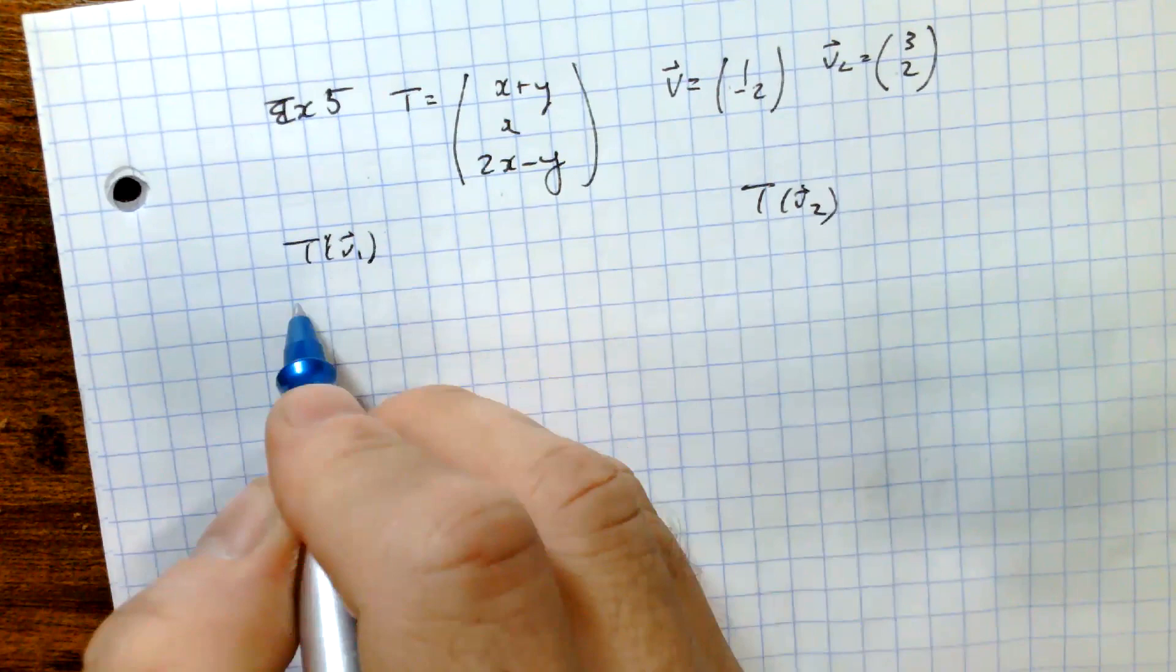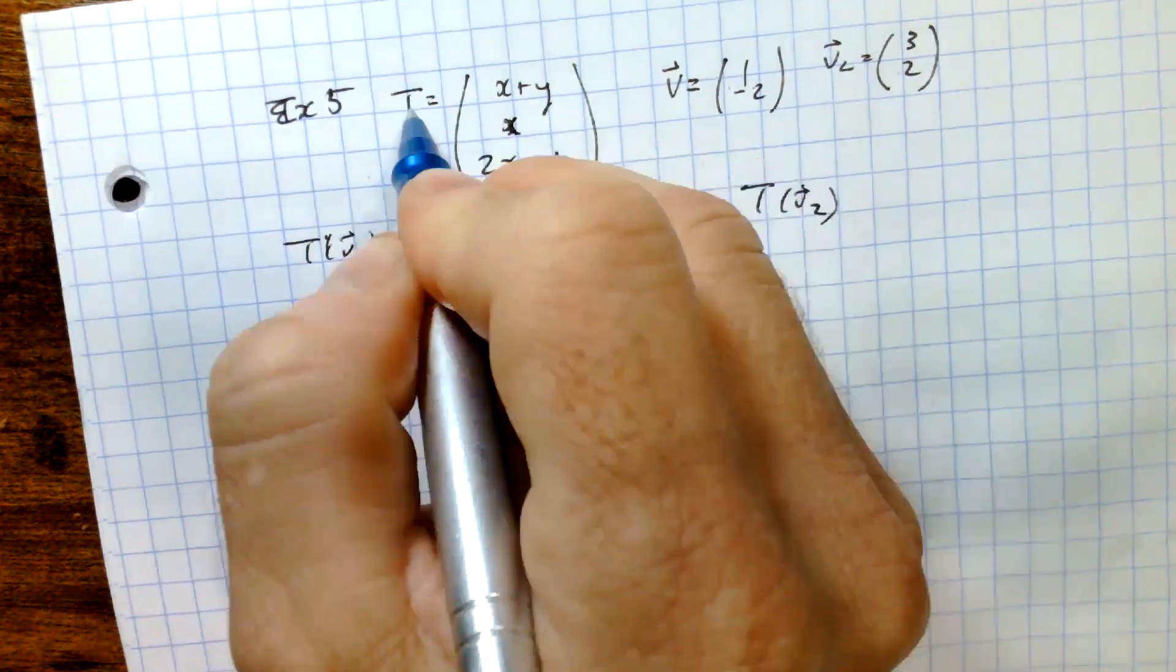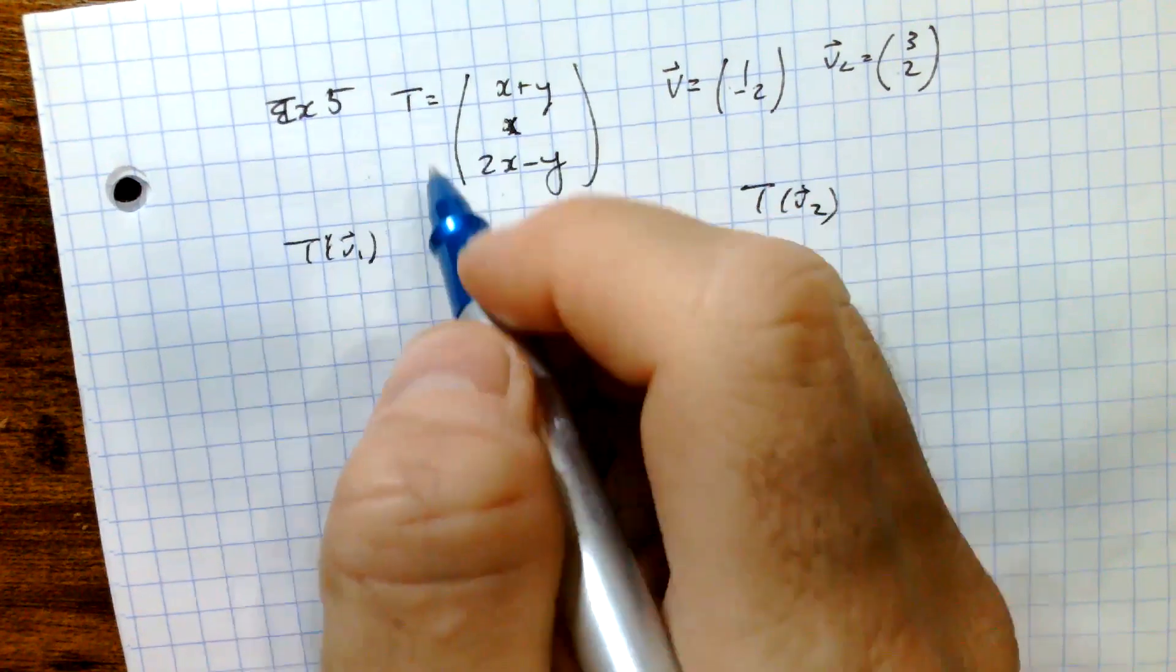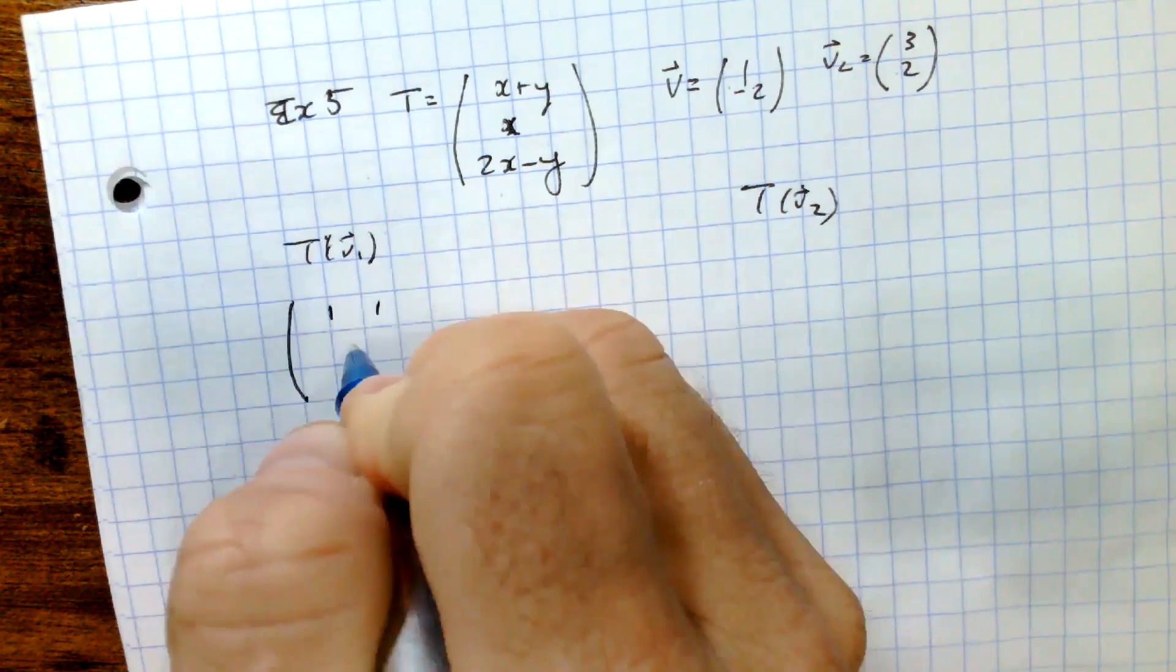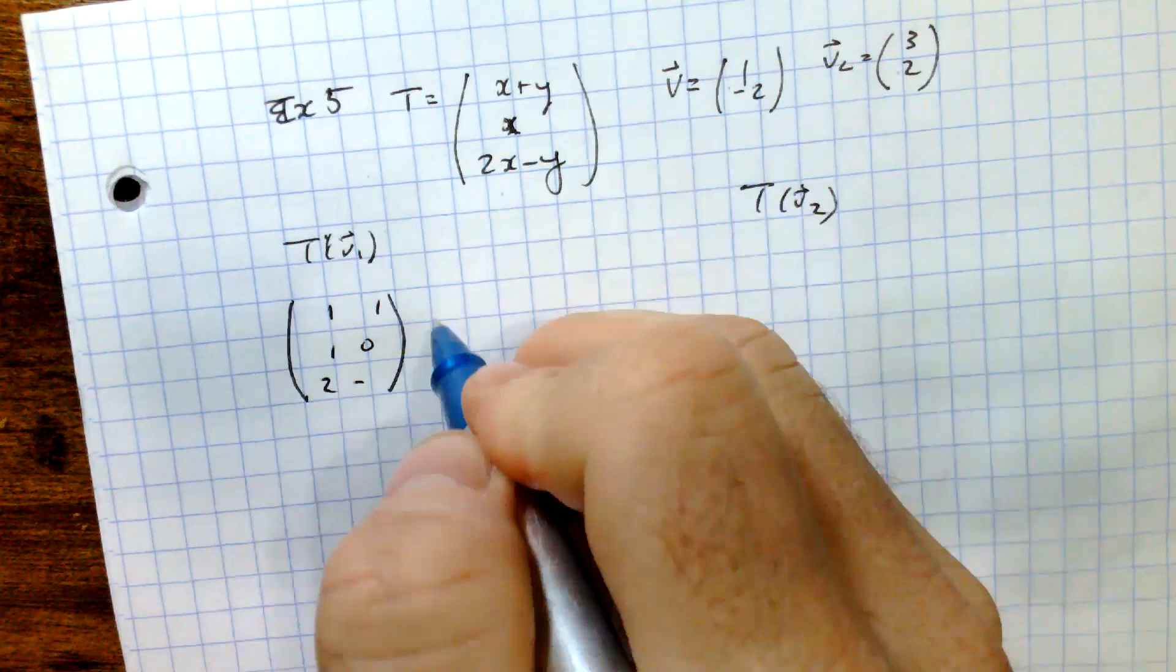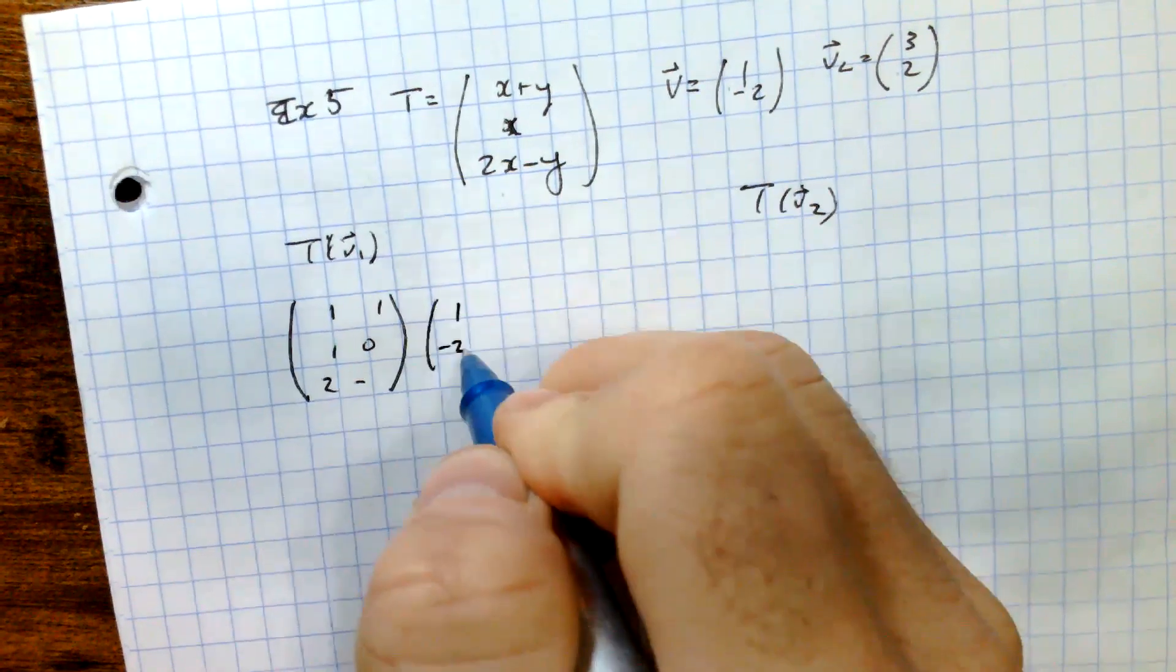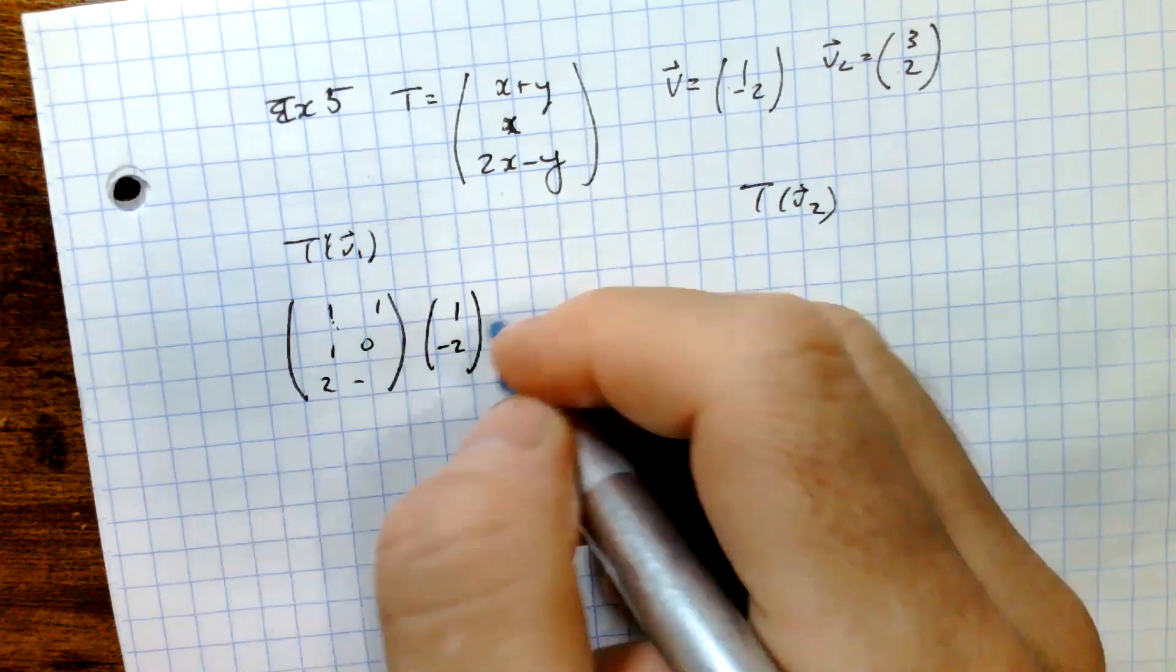In the last example, we saw how to find the transformation matrix A for this transformation from T, and so it should come to no surprise where these numbers are coming from. So let's multiply this by the vector V1, and this would be the transformation of T on V1.